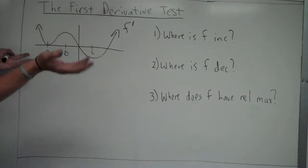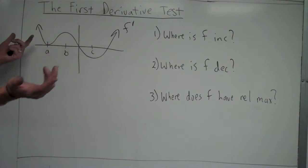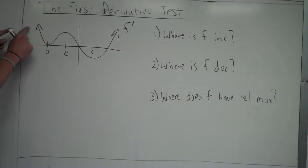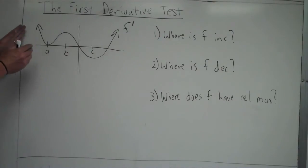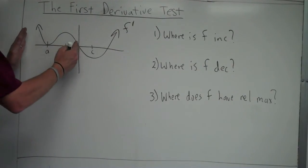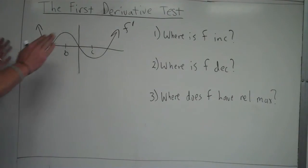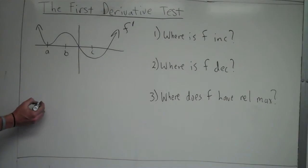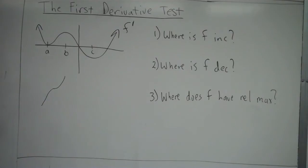When we say where is f prime greater than zero, we're asking where are the y-values of f prime greater than zero — where is f prime above the x-axis. That happens from negative infinity; it hits zero at a, but it doesn't cross the axis, and then it remains positive all the way up until zero. So f prime is positive from negative infinity up to zero, barring that little point at a where it equals zero. At a, there's a slope of zero, and then it continues to increase.